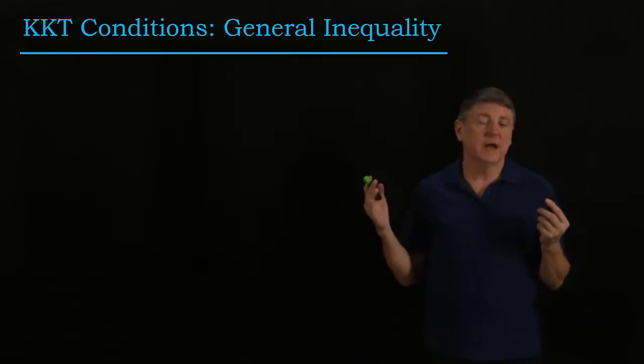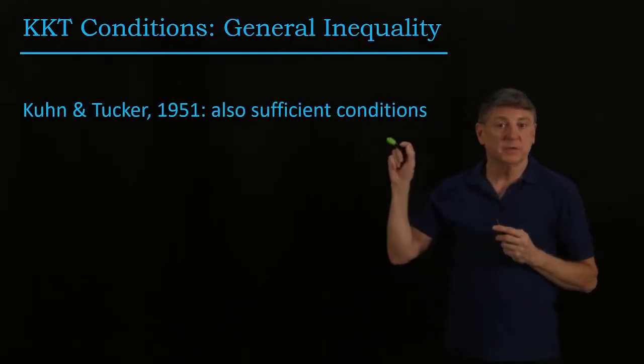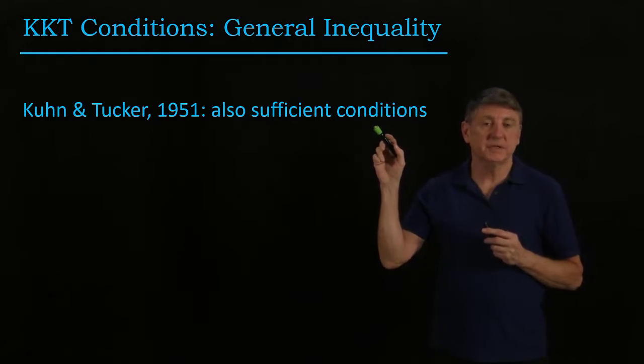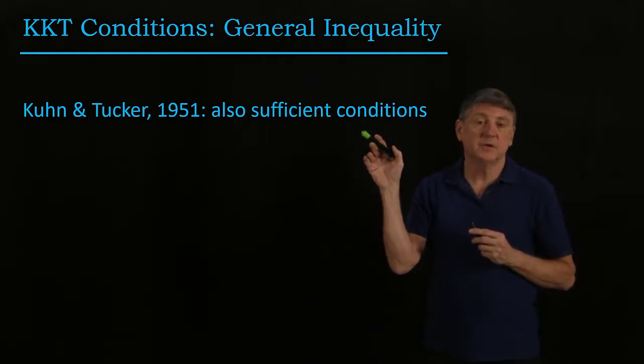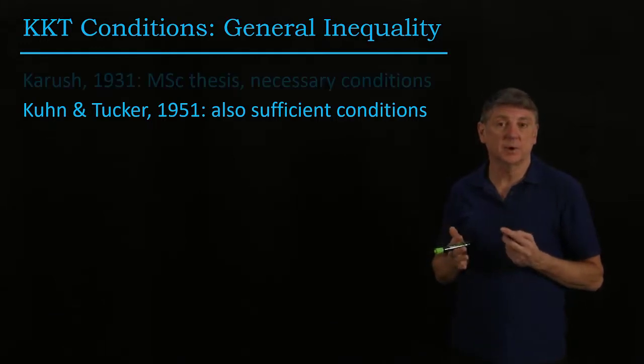These were originally proposed for general inequality constraints. They're most famously known as the Kuhn-Tucker constraints because in 1951 Kuhn and Tucker showed that these were necessary and sufficient conditions for solving a wide class of problems.